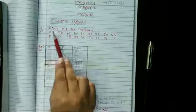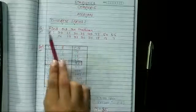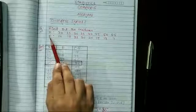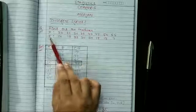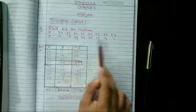The question is find out the median. X and F is given. X: 20, 25, 30, 35 and so on. And frequency is 14, 18, 33 and so on.